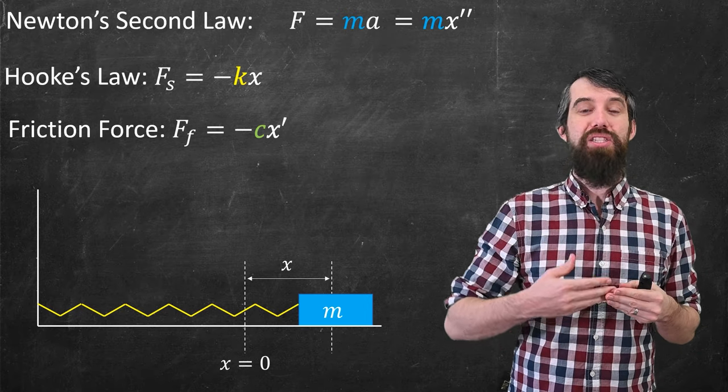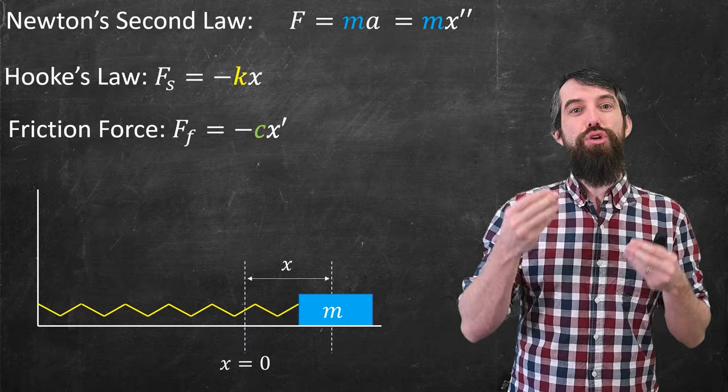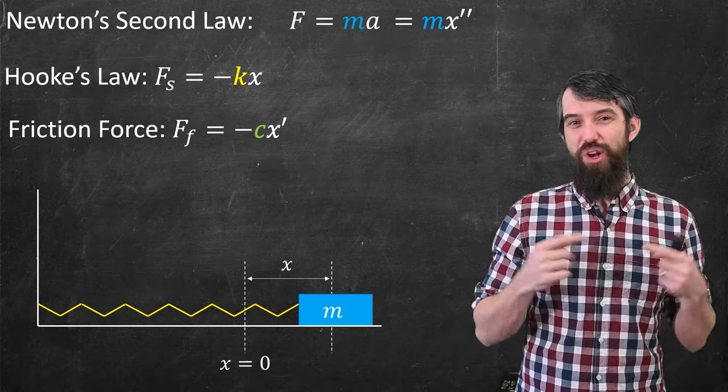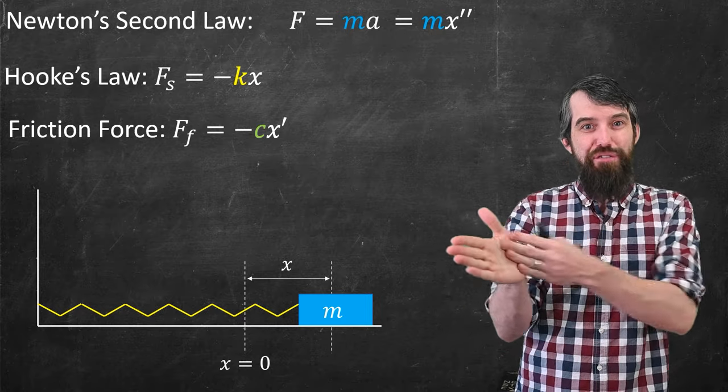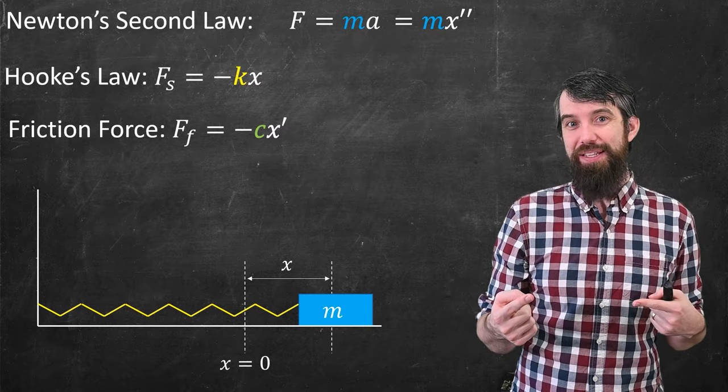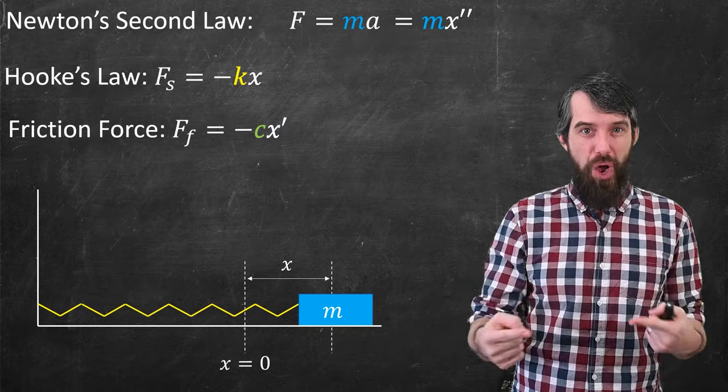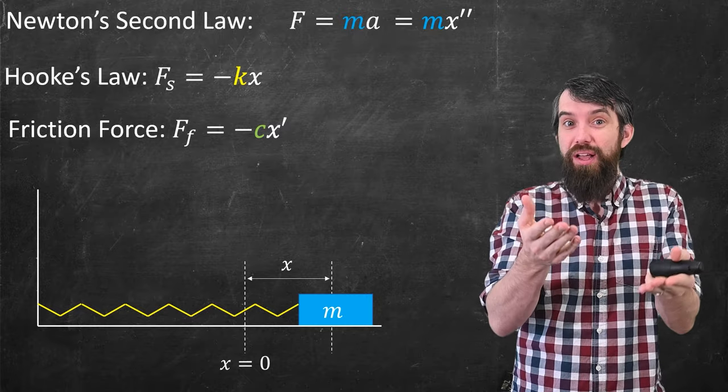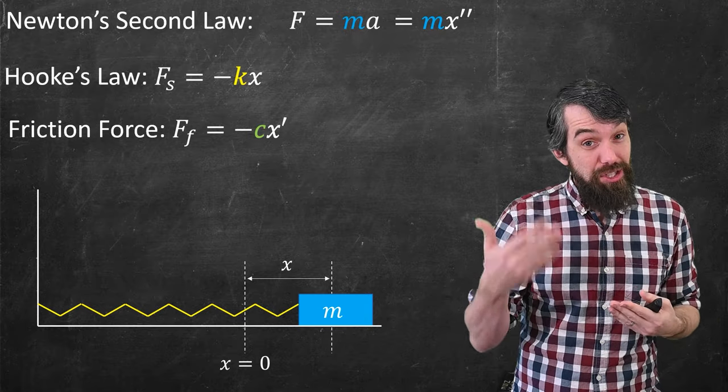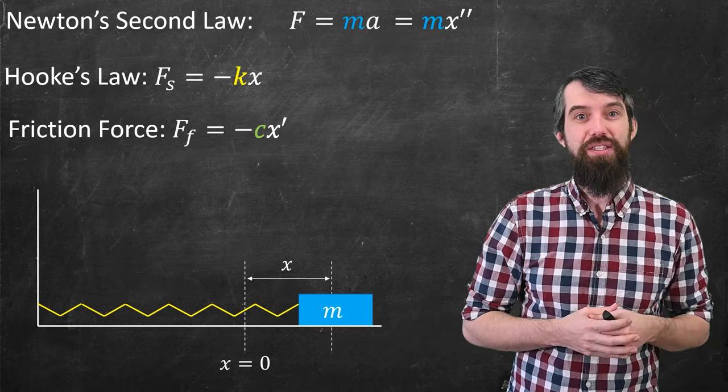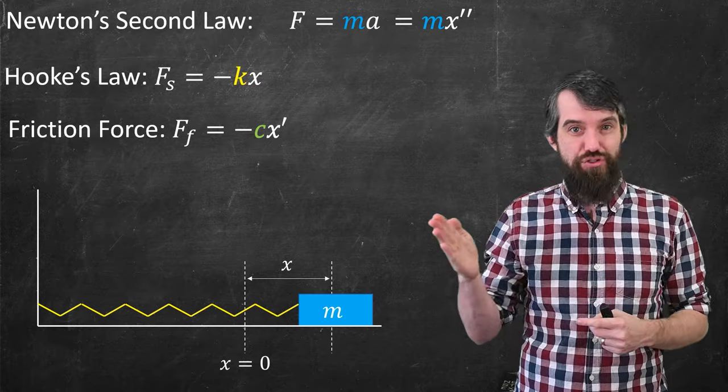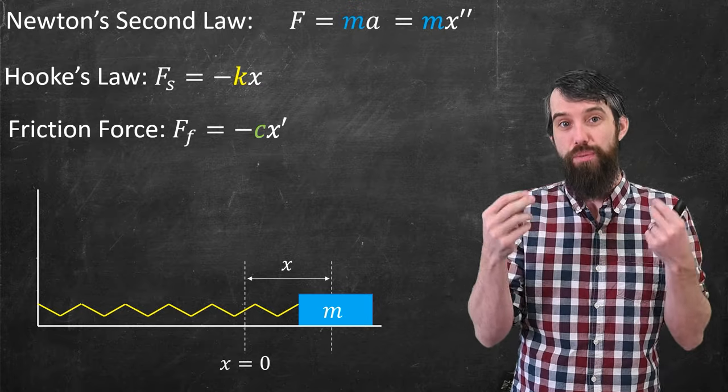So I'll call it Ff. And this is going to be proportional to the velocity. It's a negative c times x prime. Here's the idea. You know when you're driving really fast and you stick your hand out the window, you feel a lot of force. But if you're just walking, you don't feel as much force. Basically, the faster you go, the higher your velocity, the bigger your x prime, the more the friction forces are going to be affecting you. And indeed, it's also a negative value, if c is thought of as positive, because the force pushes against the direction in which you're traveling.